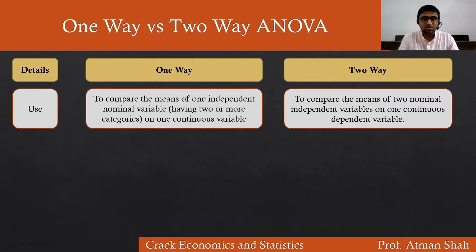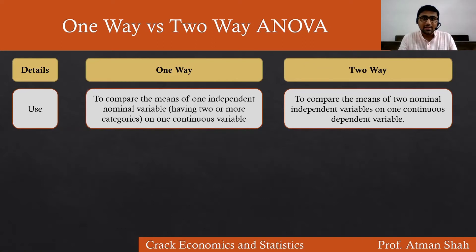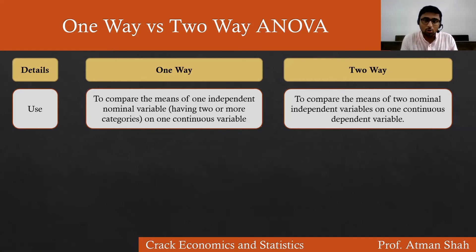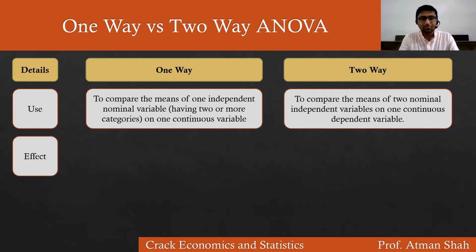Two-way ANOVA is used to compare the means of two nominal independent variables on one continuous dependent variable. In one-way ANOVA we have only one independent variable measured on a nominal scale. That is why two-way ANOVA is known as two-way ANOVA — because we have two factors, two nominal variables. In one-way ANOVA we have only one nominal factor, and that is why it is also known as one-factor ANOVA.